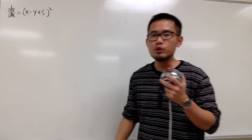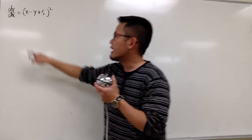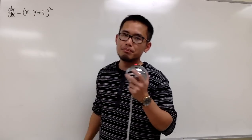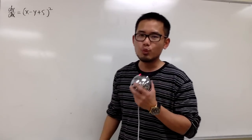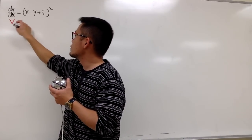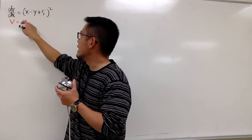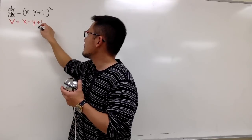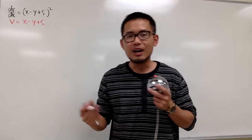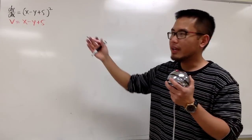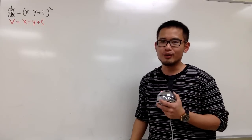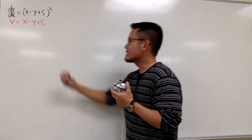Typically, we'll just let another variable, say v, to be x minus y only. But if you want to end up with the answer on Wolfram Alpha, we are going to let v equal to the entire inside, which is x minus y plus 5. And if you want to end up with the answer in the back of the book, check out my other video.